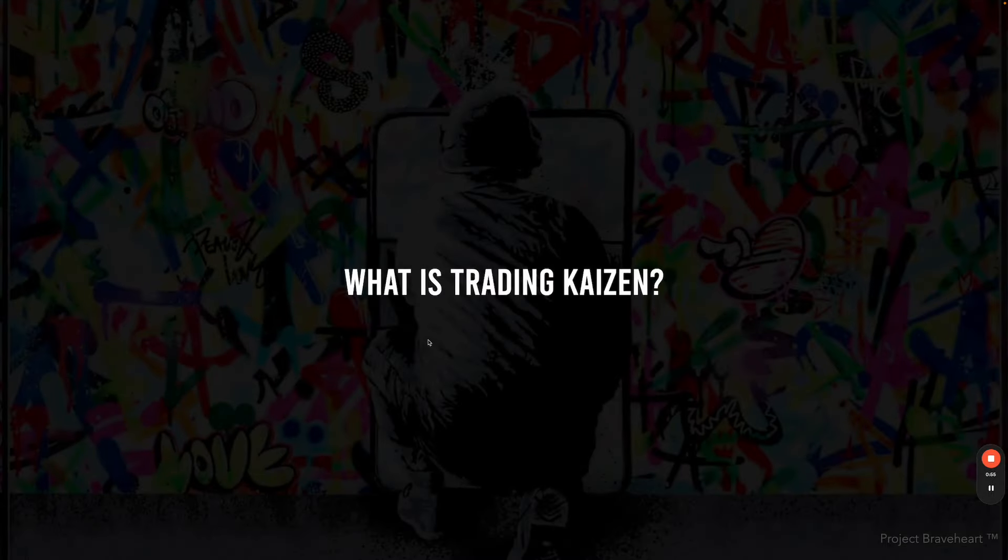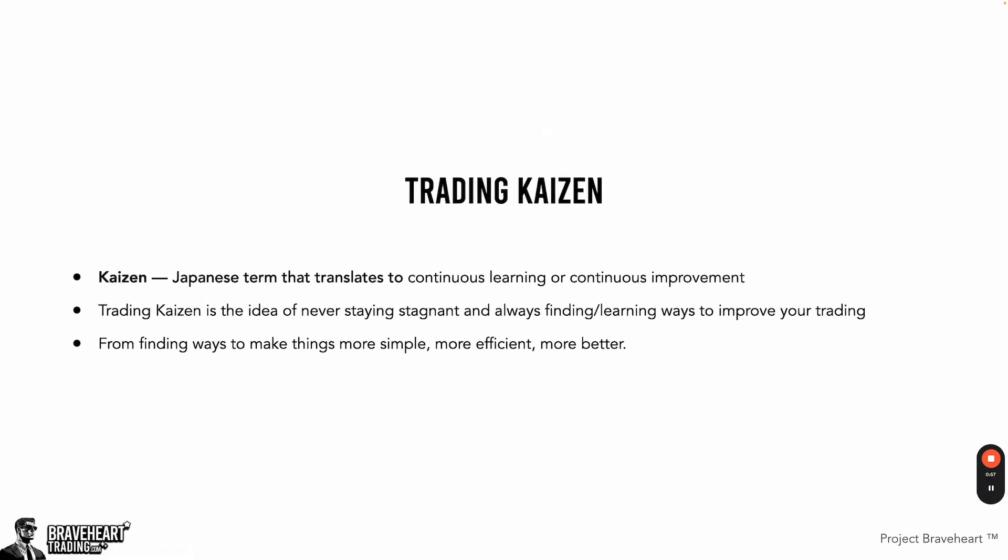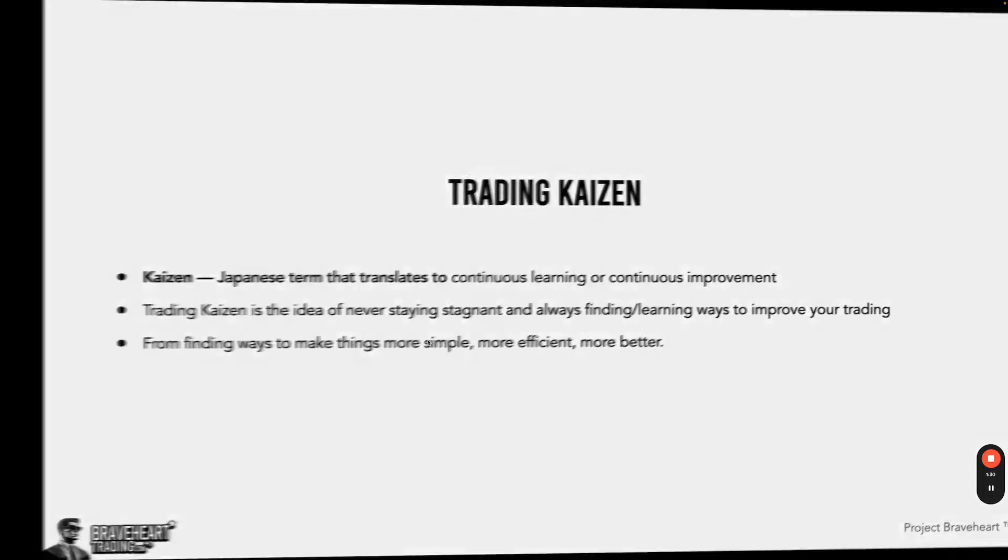So what is Trading Kaizen? Kaizen is a Japanese term that translates to continuous learning or continuous improvement. Trading Kaizen is the idea of never staying stagnant, always finding and learning new ways to improve trading — finding ways to make things more simple, more efficient, and better. Just constantly doing that over and over again.